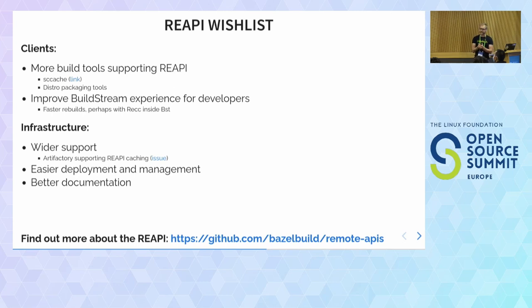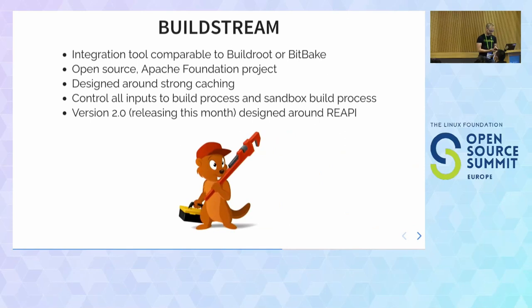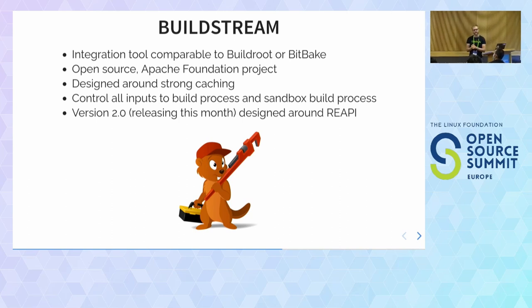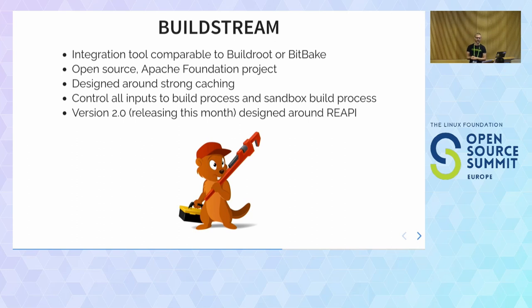In the second half I'm going to focus specifically on BuildStream — the first tool of its category to support the Remote Execution API. If you've not heard of it, it's an integration tool comparable to BuildRoot or BitBake. It's open source and has recently become part of an Apache Foundation project. The 2.0 release is due imminently — it's ready and waiting on final Apache approval. The latest unstable tag is actually going to be the 2.0 release; it's just waiting on some Apache Foundation paperwork.